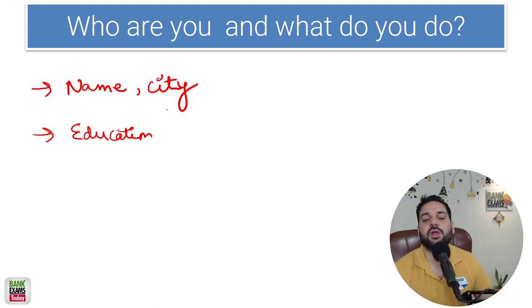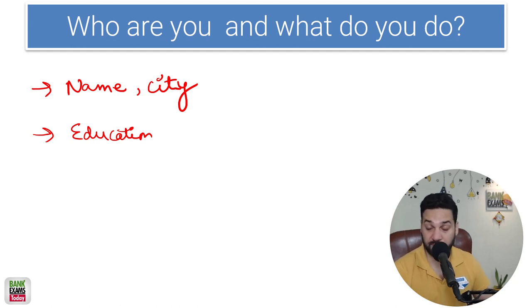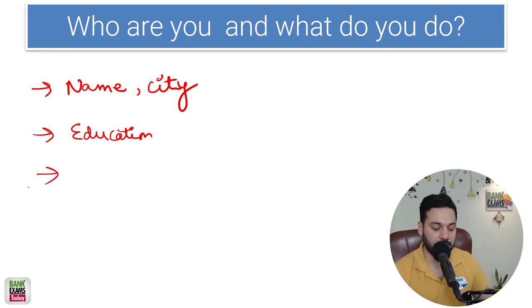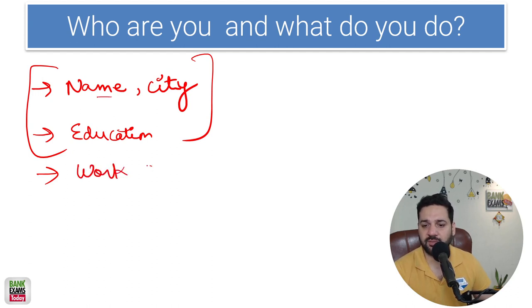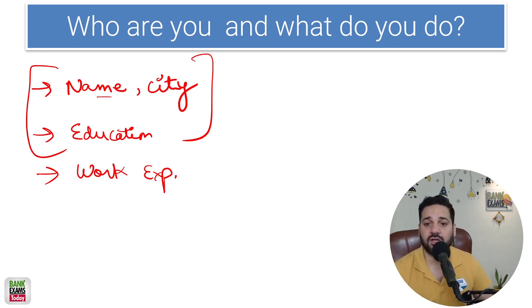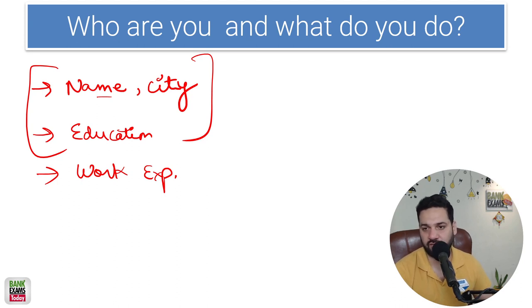About your education: I have done my graduation from Punjab University and post-graduation from Punjab Agricultural University — that's all, nothing much about it. They are not going to cross-question you on education details. You need to tell your name, city, education, and your work experience — that's the chronology. My name is this, this is my education, and this is my work experience.